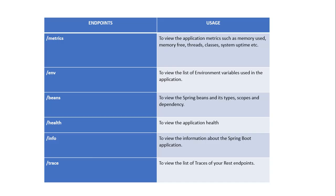These are the endpoints which, other than health, the actuator provides. We can use these to monitor our application — like we have metrics to know about memory, then environment, then beans, active beans and scope of beans, health, info, and trace. Spring Boot Actuator is a very big topic, so in this video I've just covered it as part of an interview question. In an upcoming video, I will create a separate dedicated video on Spring Boot Actuator where I will explain all these endpoints as well.